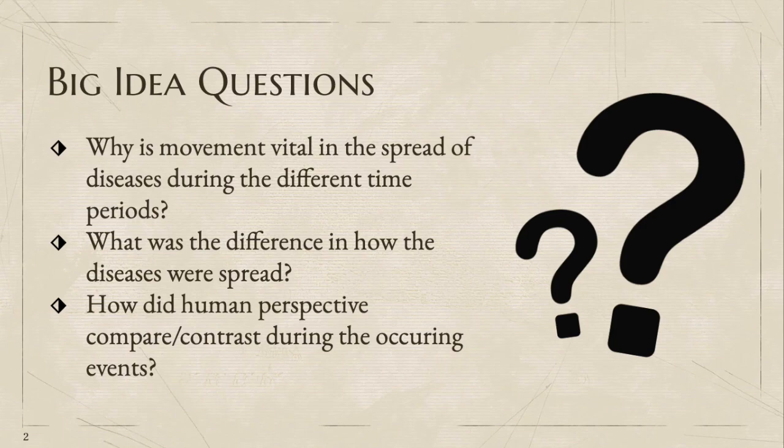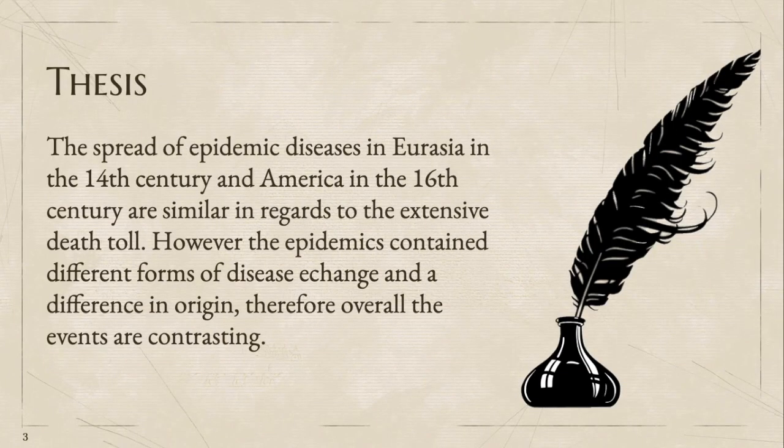And lastly, how did human perspective compare or contrast during the occurring events? Our thesis is centered around the spread of epidemic diseases within Eurasia in the 14th century and America in the 16th century. Both are similar in regards to the extensive death toll. However, the epidemics contain different forms of diseases and a difference in origin; therefore, it is overall contrasting.